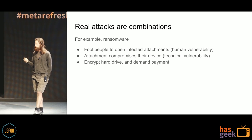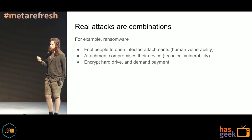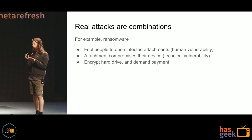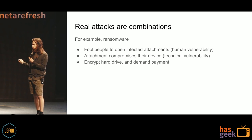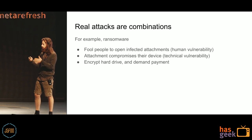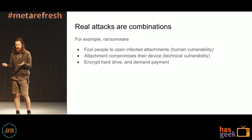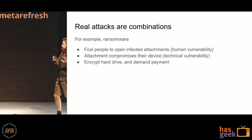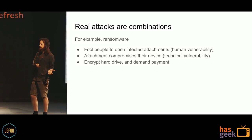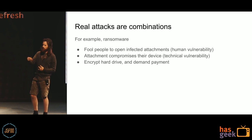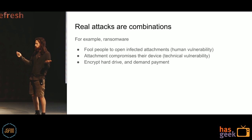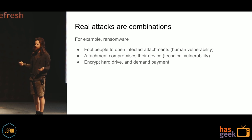Real attacks are always combinations of things. For example, for ransomware to work, first you need a social engineering attack to get people to open attachments, which compromises their system via some technical problem. Then they encrypt the hard drive and demand payment. Encrypting a hard drive works because of how file systems are designed — if you had a file system that always allowed rollback to a previous state, this wouldn't work. It only works because file systems are mutable and you can overwrite files without going back to the old version.